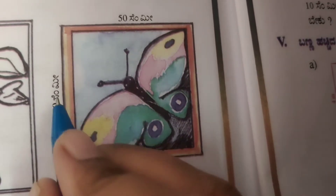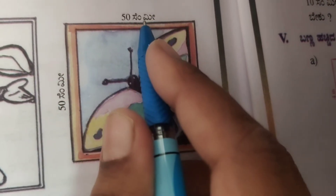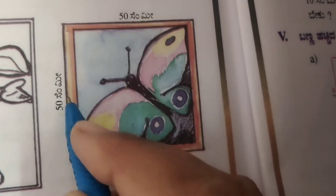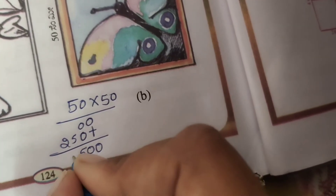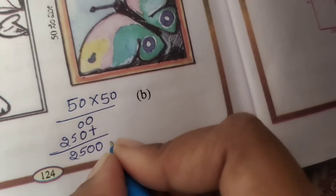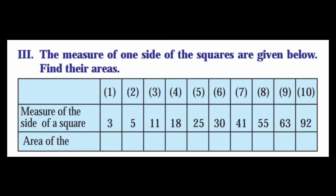Next problem: 50 centimeters into 50 centimeters. 0 into 0 is 0, 0 fives are 0, plus 5 zeros are 0, 5 fives are 25. Result: 2500 centimeter square.